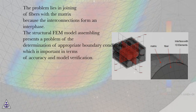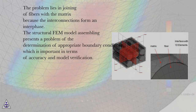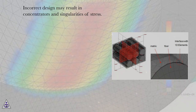The problem lies in the joining of fibers with a matrix, because the interconnections form an interface. The structural FEM model assembly presents a problem of determining appropriate boundary conditions, which is important in terms of accuracy and model verification. Incorrect design may result in concentrators and singularities of stress.